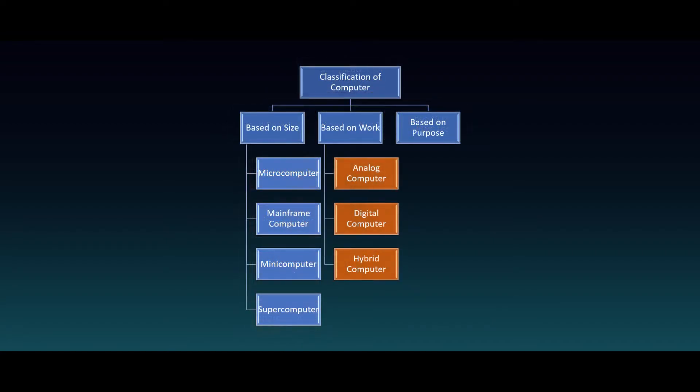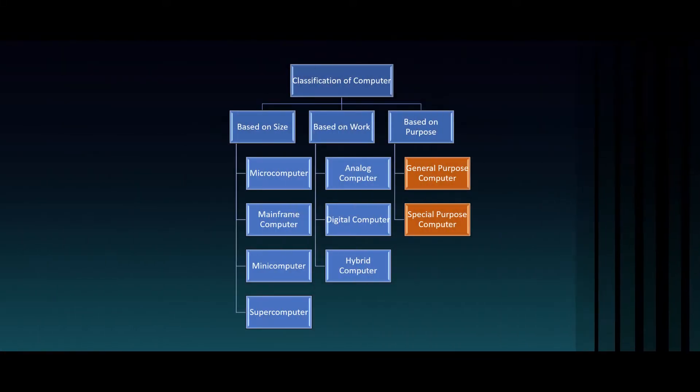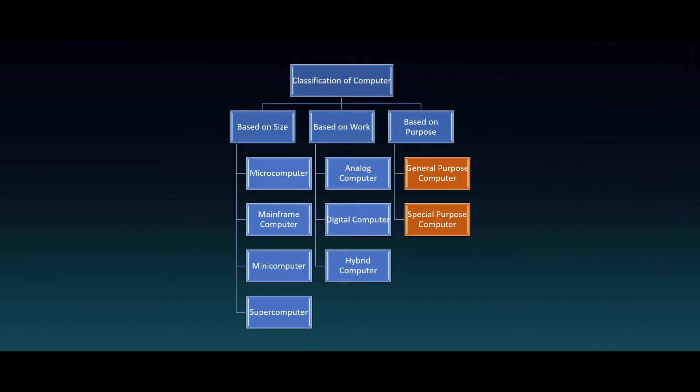Based on work, a computer can be divided into three categories: 1. Analog computer. 2. Digital computer. 3. Hybrid computer. Based on purpose, a computer can be divided into two categories: 1. General-purpose computer. 2. Special-purpose computer.